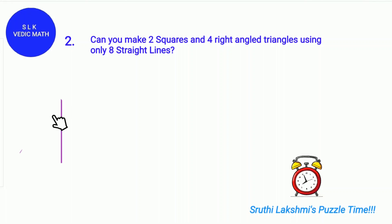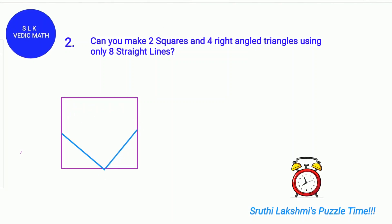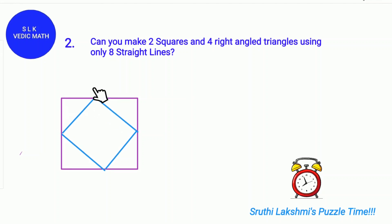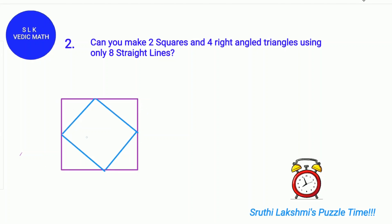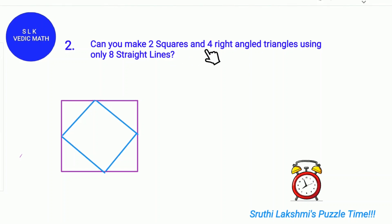First, this is the first line. Second line, next the 3rd and 4th. Then it's the 5th, 6th, 7th and 8th. There are 8 lines and it makes 2 squares — square 1 and square 2. And it has 4 right angle triangles: 1, 2, 3 and 4. This is how you can make 2 squares and 4 right angle triangles using only 8 lines.